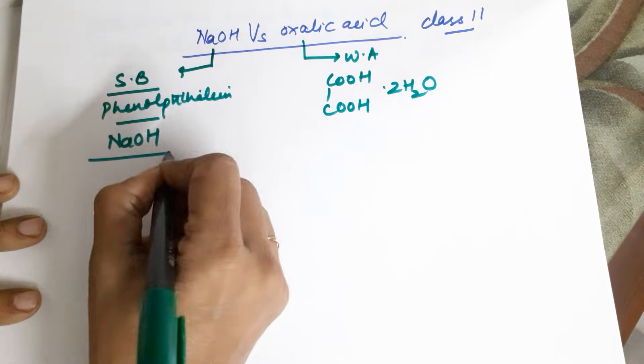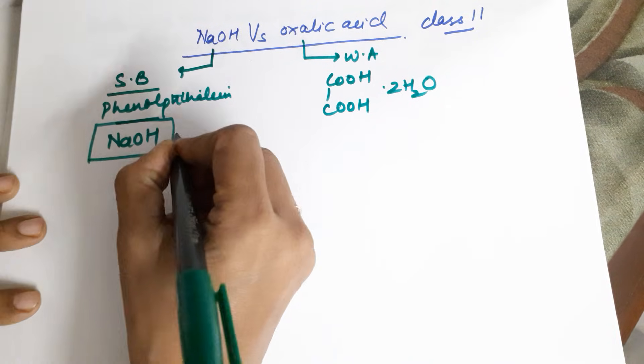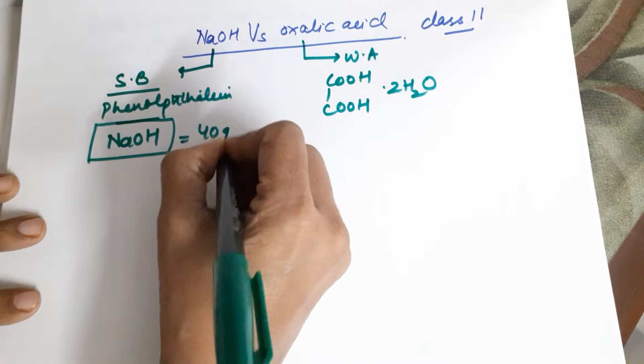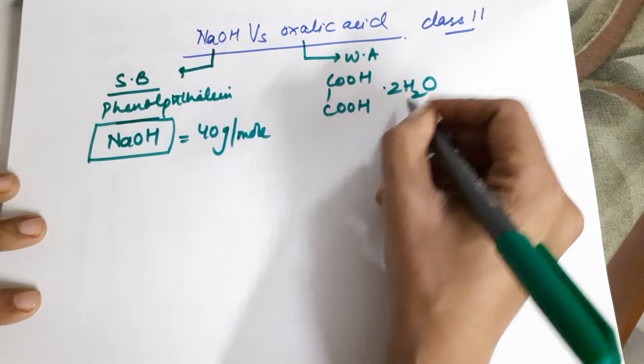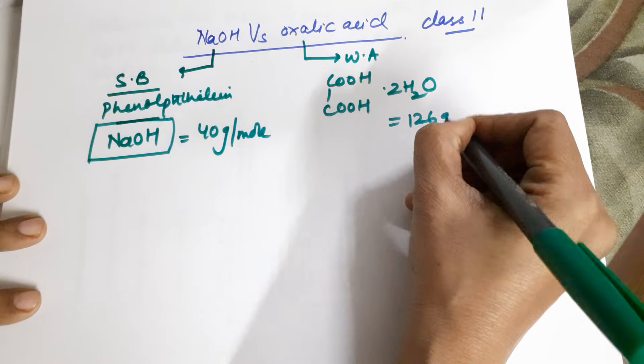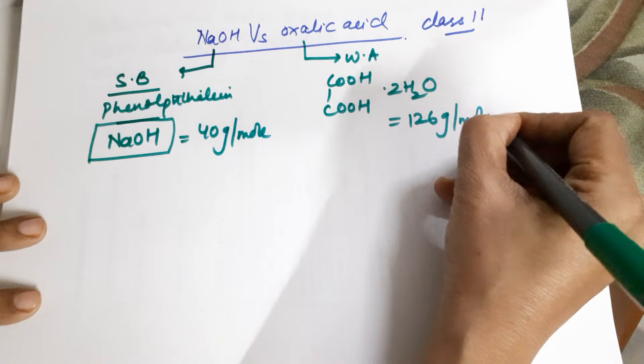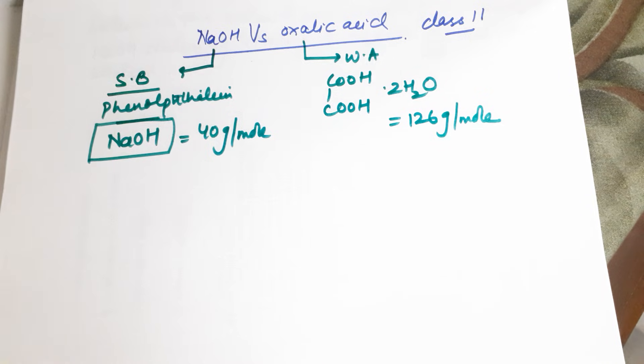Just in case required, you should know the molar masses of the two. This comes out to be 40 grams per mole. While if you calculate for this, this would come out to be 126 grams per mole. The indicator used is phenolphthalein.